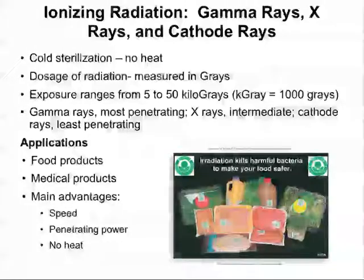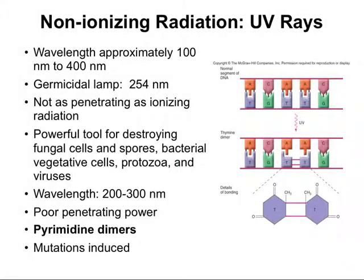When we look at non-ionizing radiation, we're considering ultraviolet rays. The wavelengths are approximately 100 to 400 nanometers, with 240 to 280 being the most lethal doses. Ultraviolet radiation is not nearly as penetrating as ionizing radiation because it has a lower energy state. The most common tool we'll see in non-ionizing radiation treatment is the germicidal lamp, which runs at about 254 nanometer wavelengths of light. These are really powerful tools for destroying fungal cells and spores, bacterial vegetative cells, protozoa, and viruses.